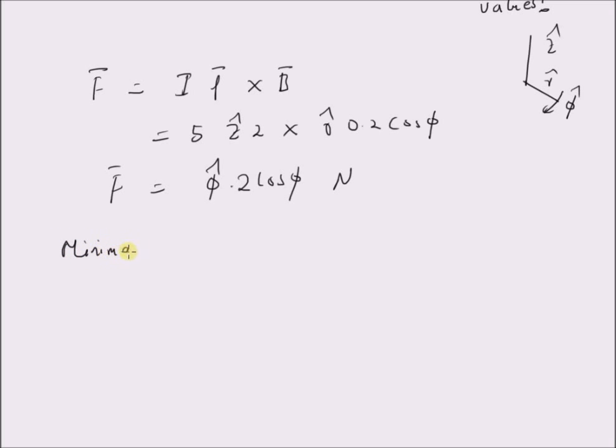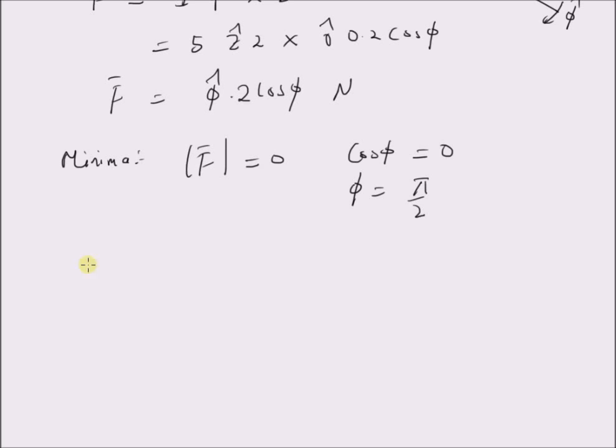The minima, that is the magnitude of the force vector is equal to 0 only when cos phi is equal to 0. That happens when phi is equal to pi by 2, that is at an angle phi equal to pi by 2, the force is clearly equal to 0.